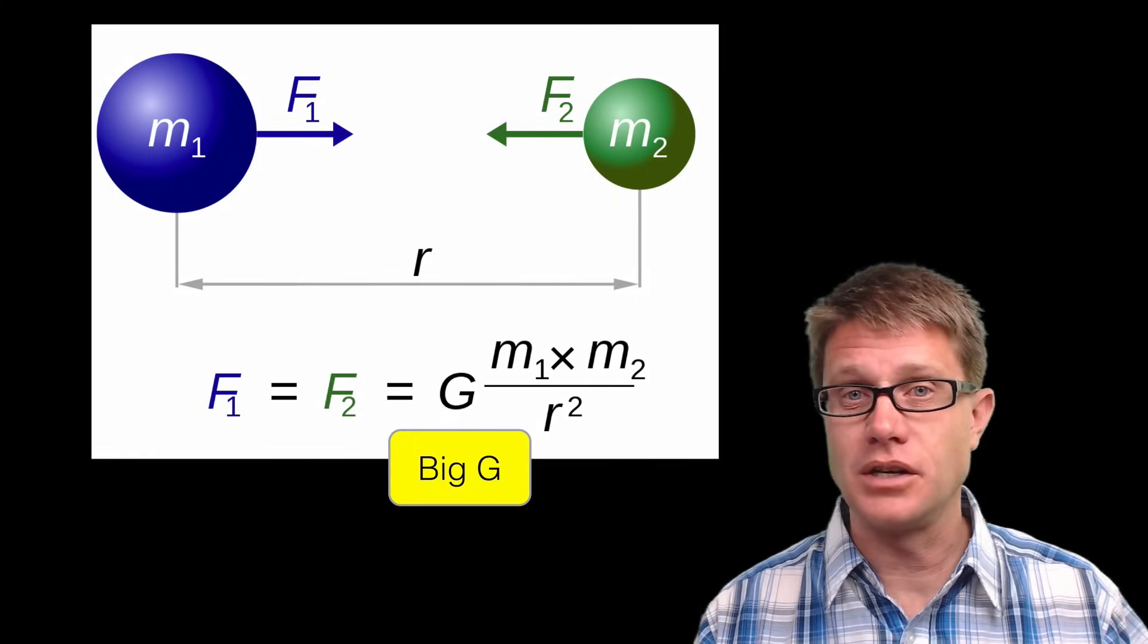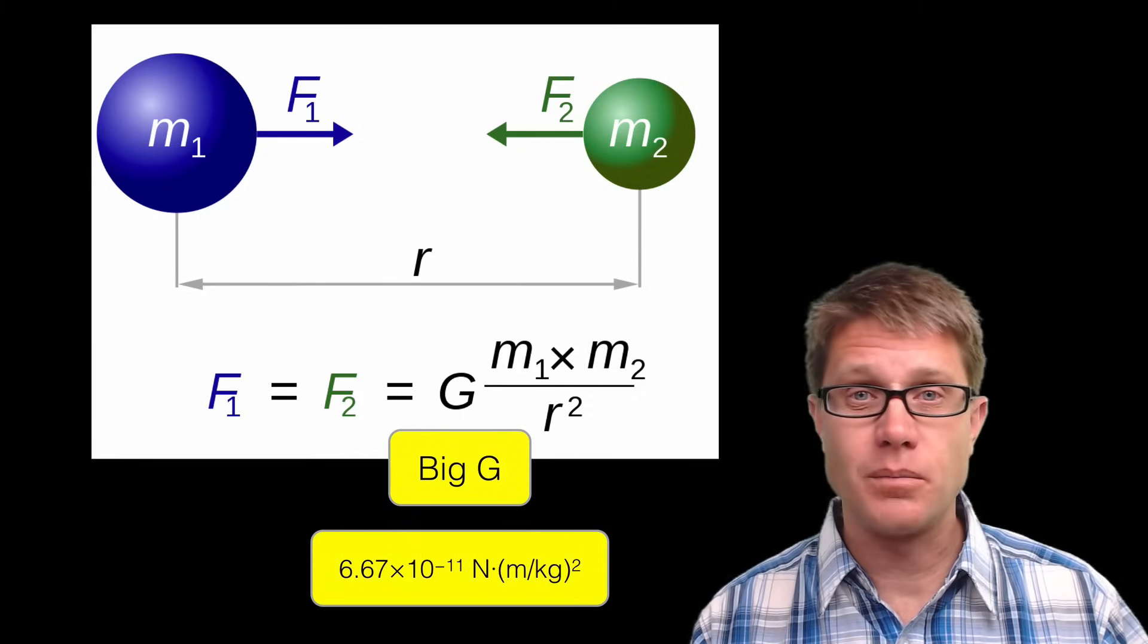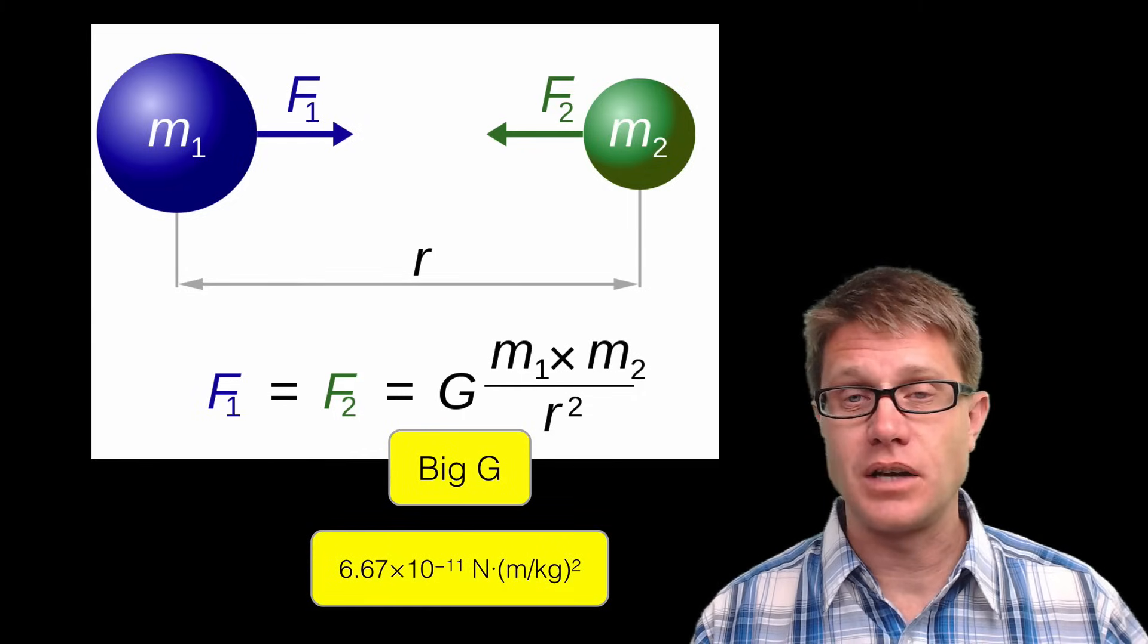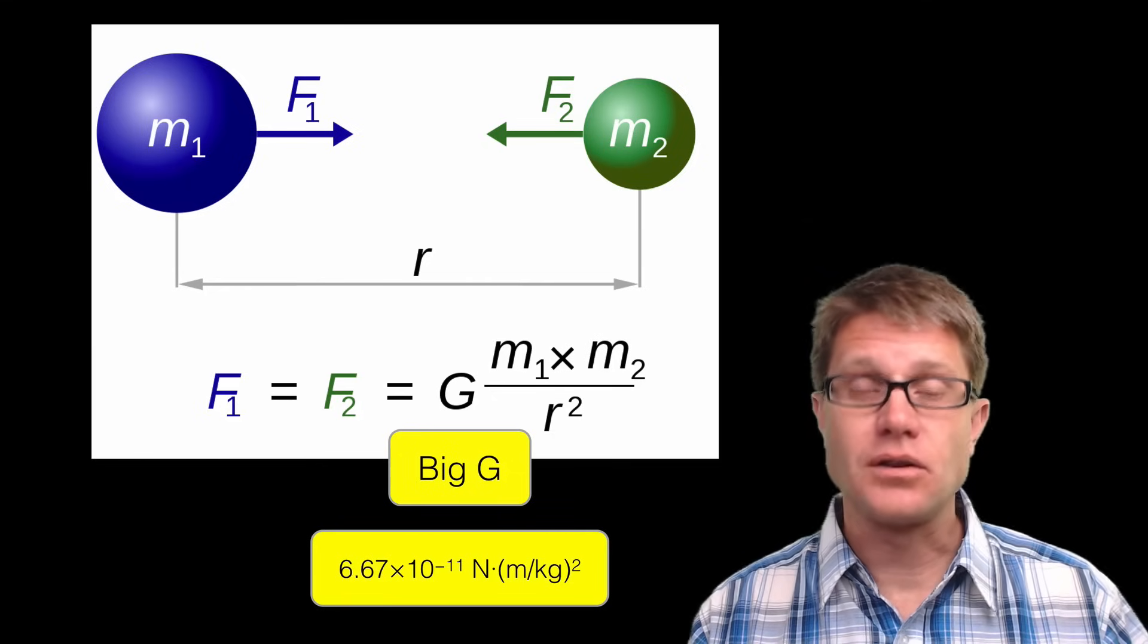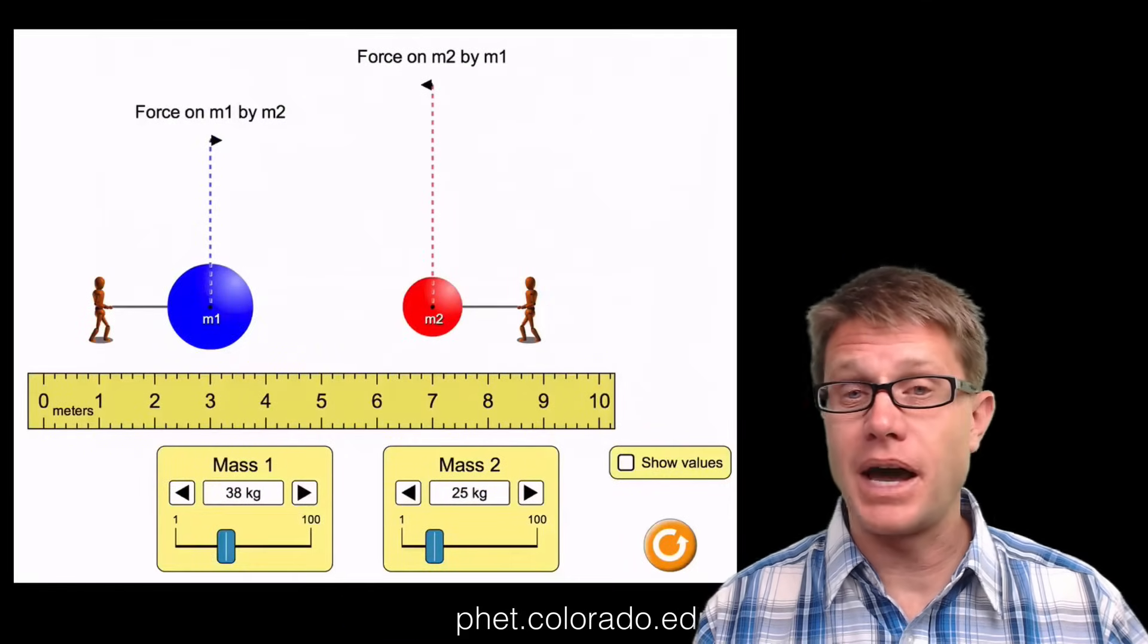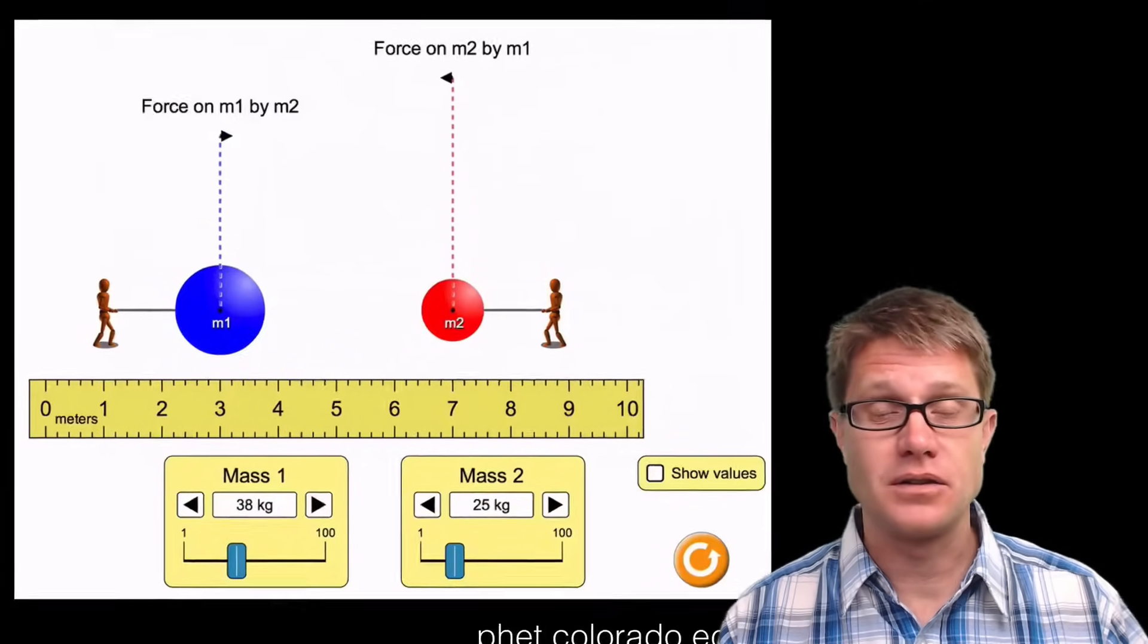Where G, we will refer to it as big G, is a constant. And it is worth memorizing. It is 6.67 times 10 to the negative 11th. And so what else do we have in this equation? It is the mass of the two objects and then the center-center distance.